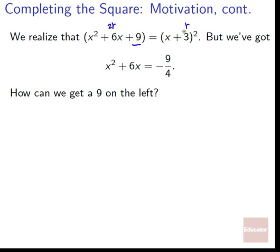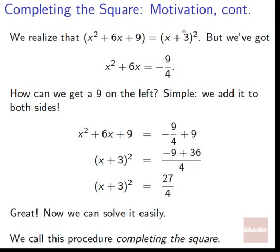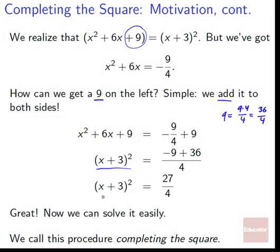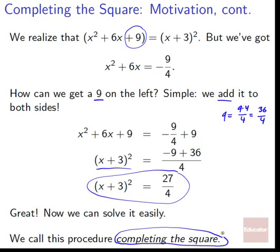Our equation is x² + 6x = −9/4. To get 9 on the left, we add 9 to both sides: x² + 6x + 9 = −9/4 + 9. The left side collapses to (x + 3)². On the right, since 9 = 36/4, we get (−9 + 36)/4 = 27/4. So (x + 3)² = 27/4. If we wanted, we could solve this easily — take the square root of both sides to get ±√27/√4 = x + 3. This procedure is called completing the square.